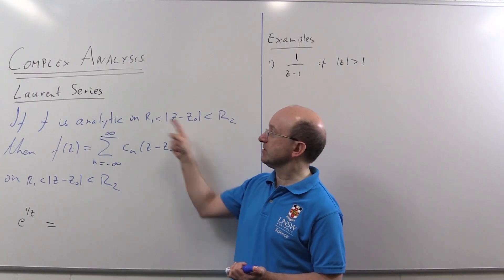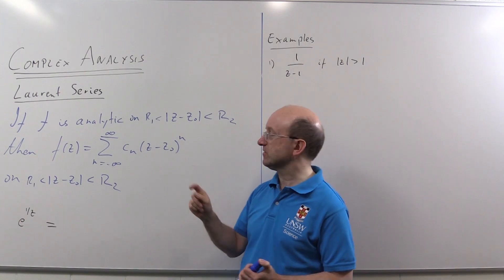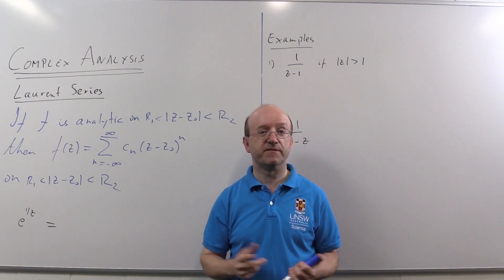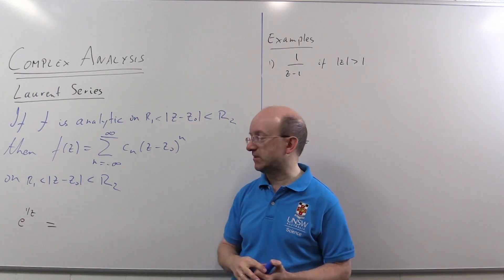Now of these two numbers, r1 could be zero, so we could have what we call a punctured disc, a disc with just the middle point taken out. And r2 could be infinity, but r2 will have to be strictly bigger than r1 given what I've written here.